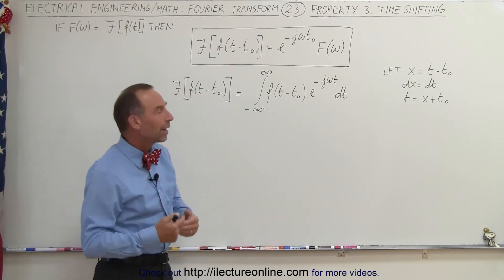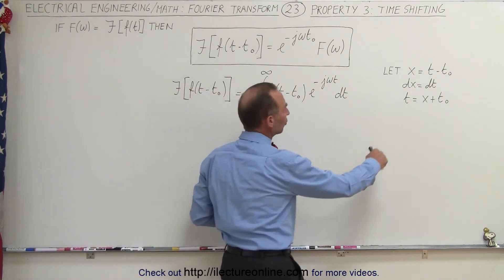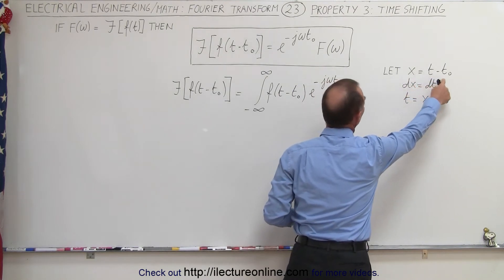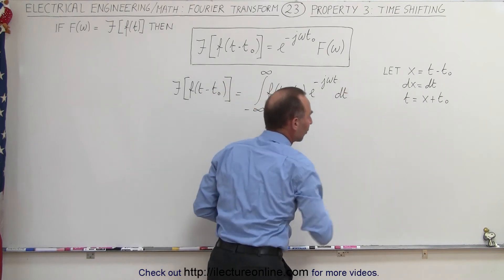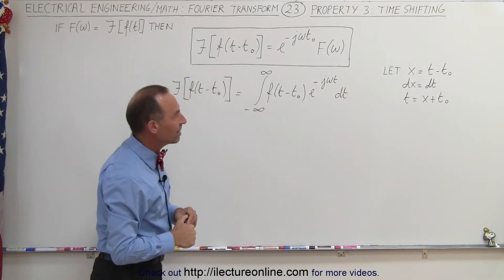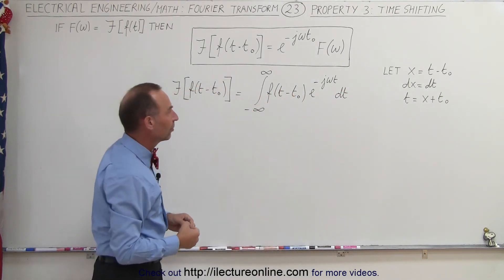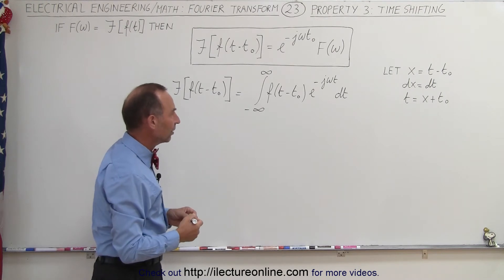Now, to be able to integrate that, we're going to make a substitution. We're going to let x be t minus t sub-naught, so this now becomes a function of x. And then we have to take care of the rest, so dx becomes dt, and t becomes x plus t sub-naught, which is just a constant.